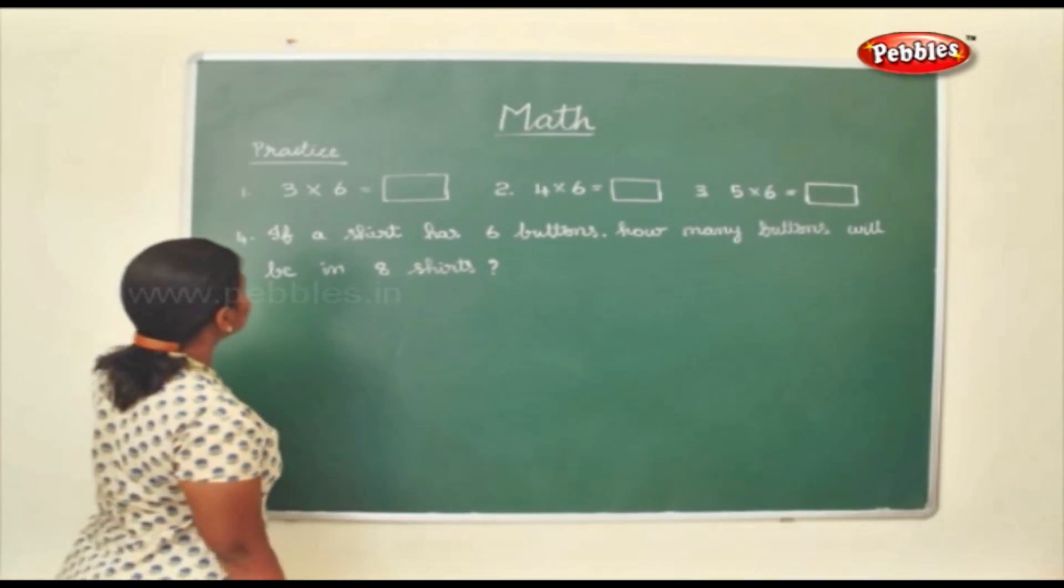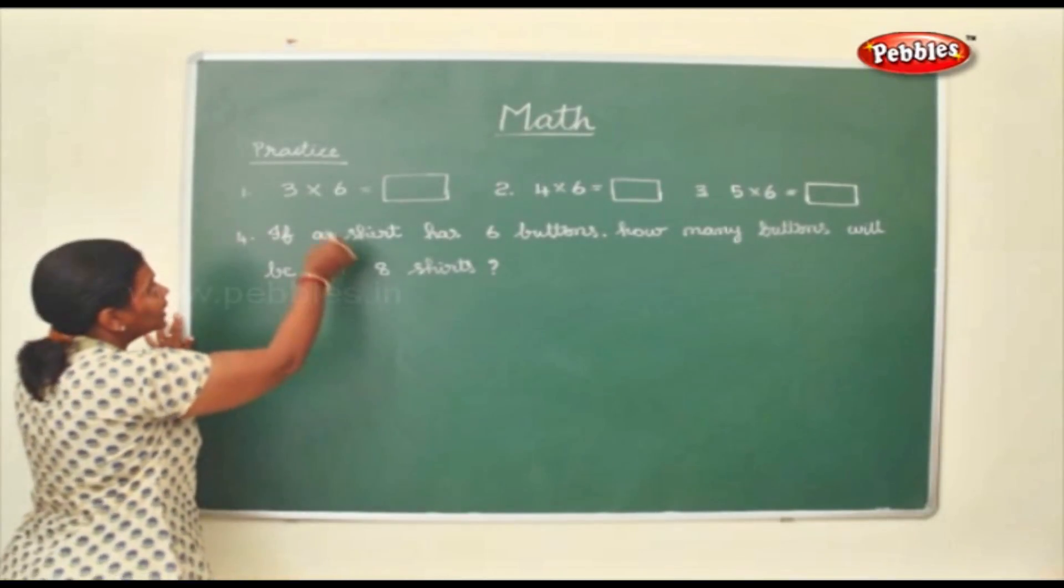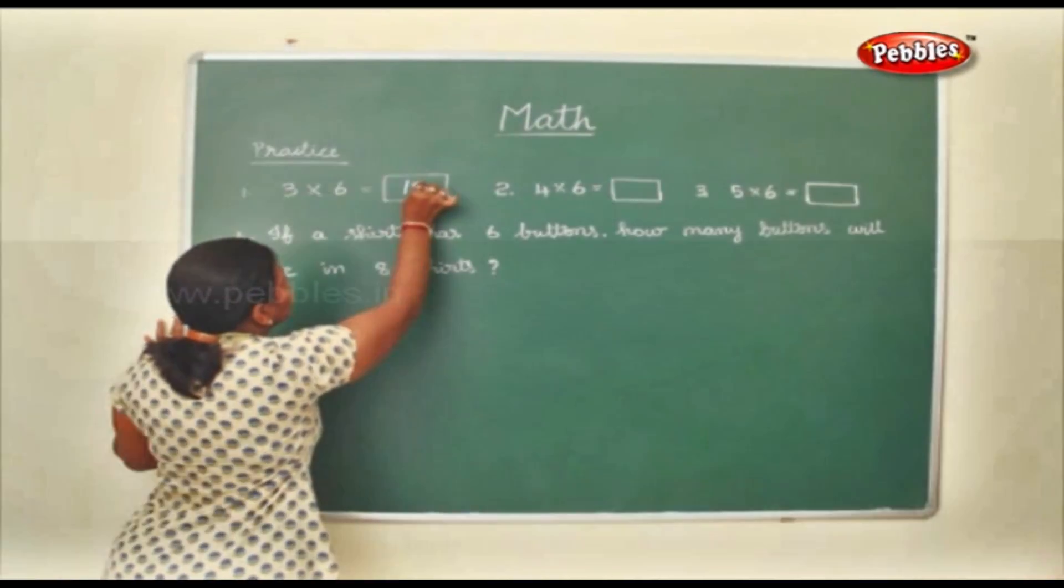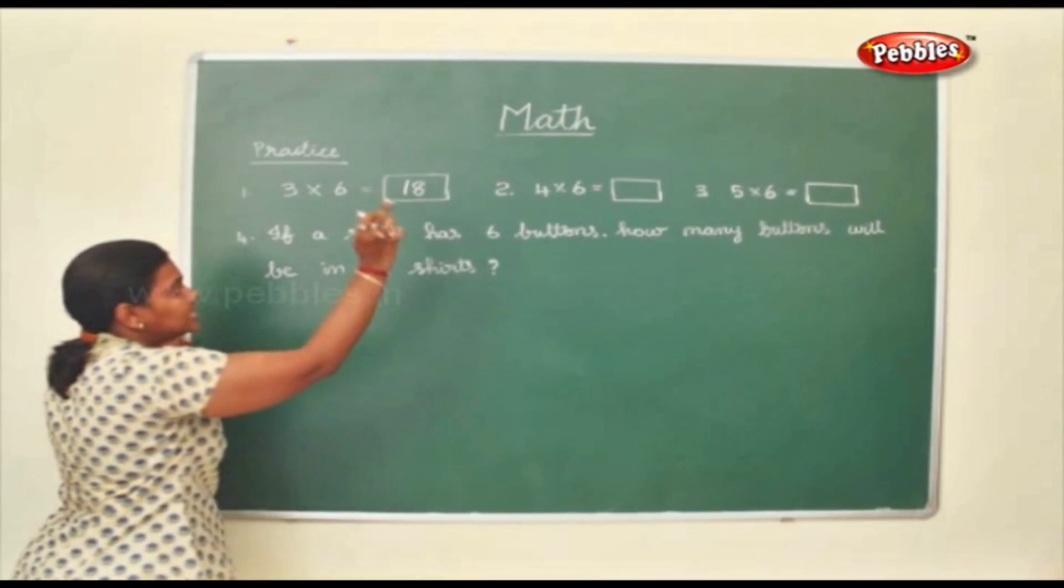Now we shall practice with 6 tables. You have to know your tables very well. 3, 6 are 18. If you interchange 6, 3's also will be the same 18.